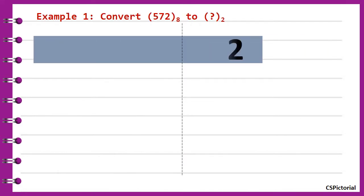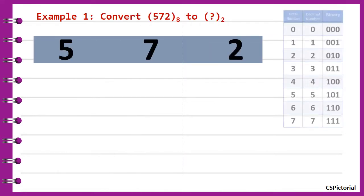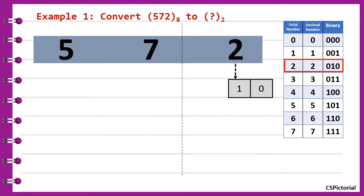For example, convert an octal number 572 into binary. Remember this table for octal to binary mapping for digits 0 to 7.